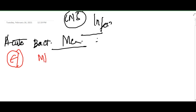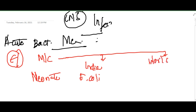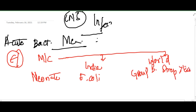The most common cause of acute meningitis in India in neonates is E. coli. In the world, in neonates, it is Group B Streptococci followed by E. coli. But in India, in neonates, it is E. coli.